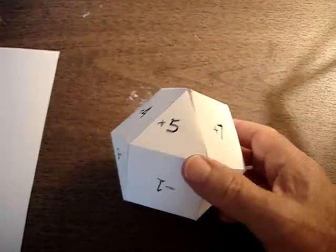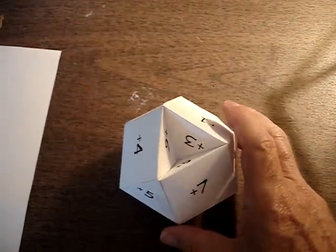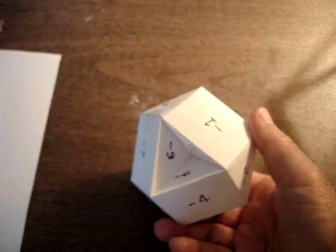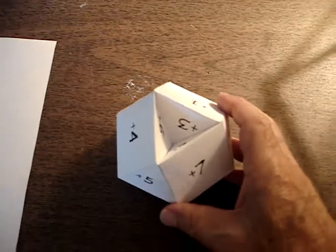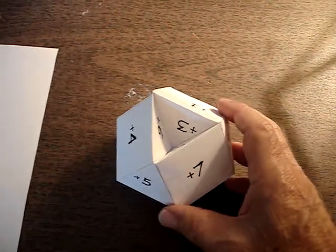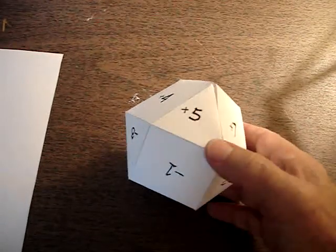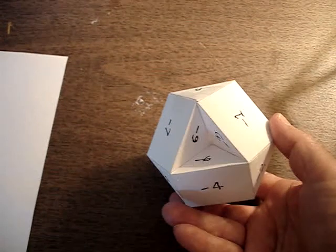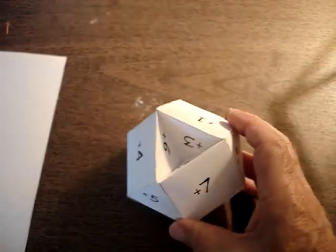And the interesting thing about this is that each edge is the same length on the entire object. So that's about the most fundamental you can get. There's just one number represented on each face, one face for each number, nine positive numbers, nine negative numbers.